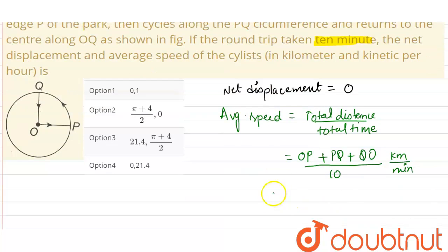Okay, now OP is 1 kilometer, plus PQ will be - this angle is 90 degrees, so it will be π/2, that is r·θ, that is π/2 × 1, plus 1, divided by 10. This will be kilometer per minute.